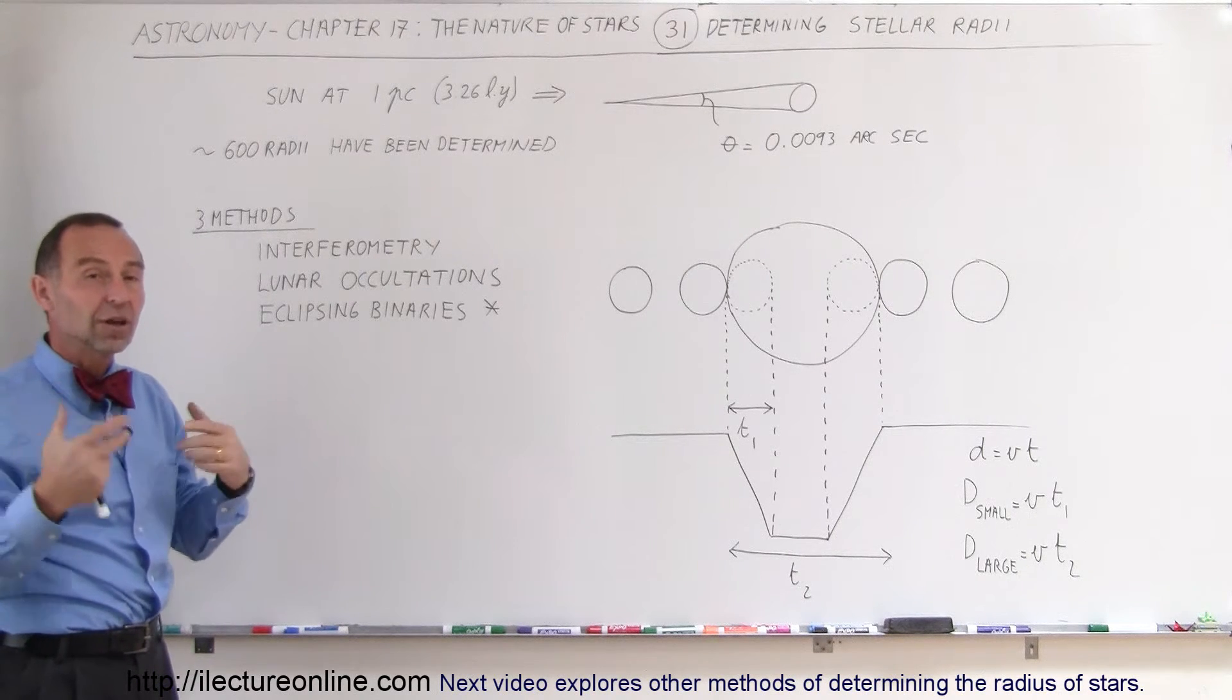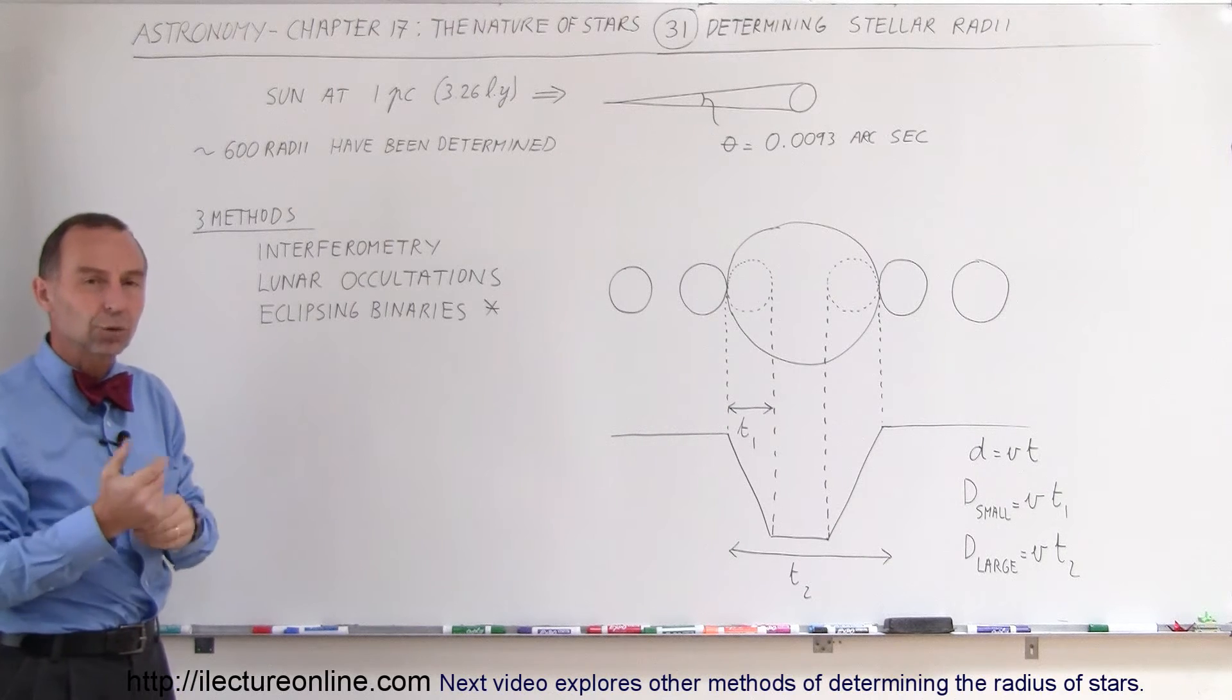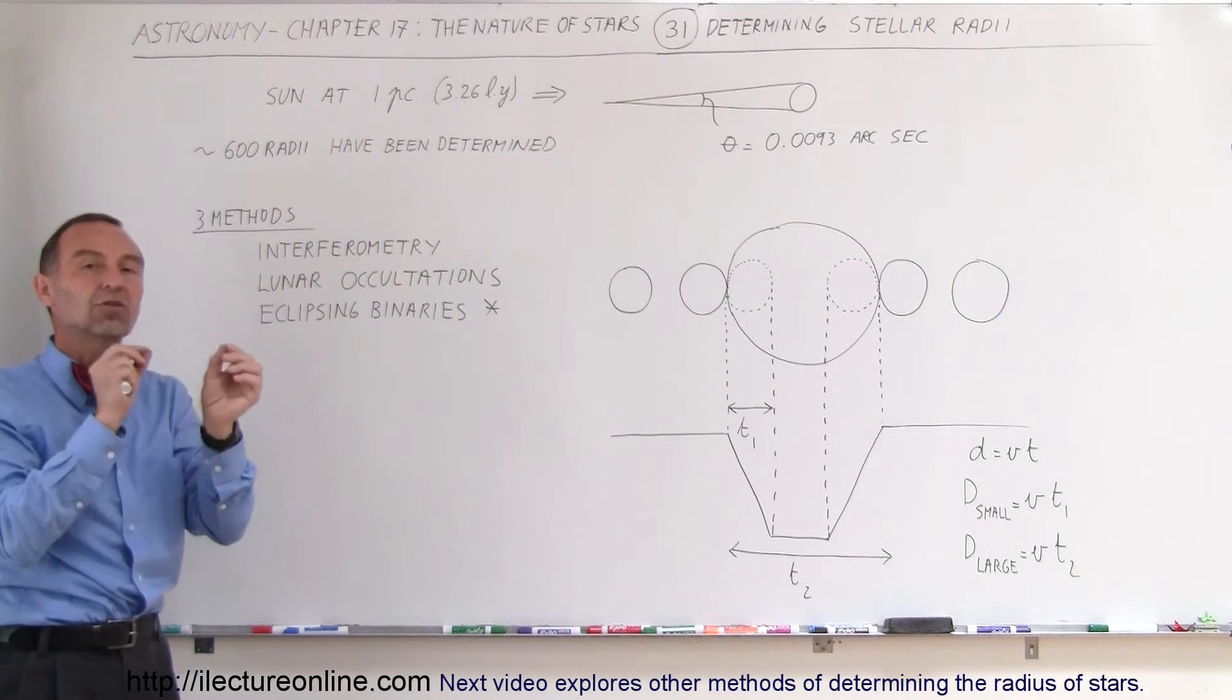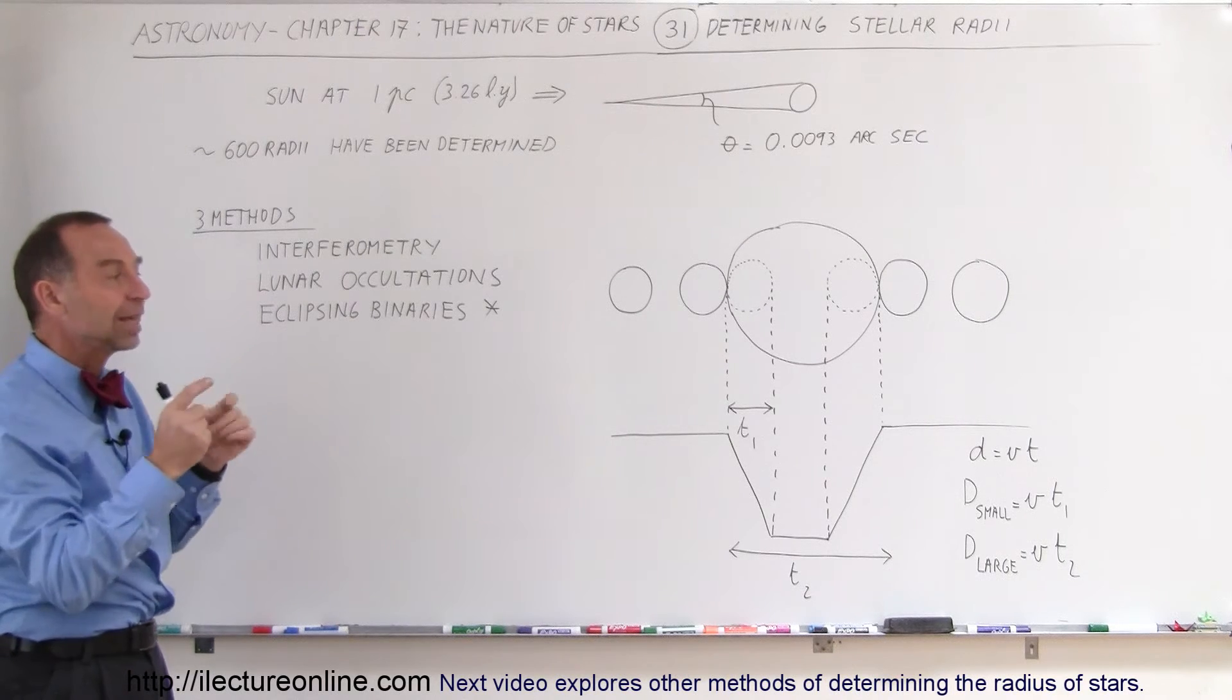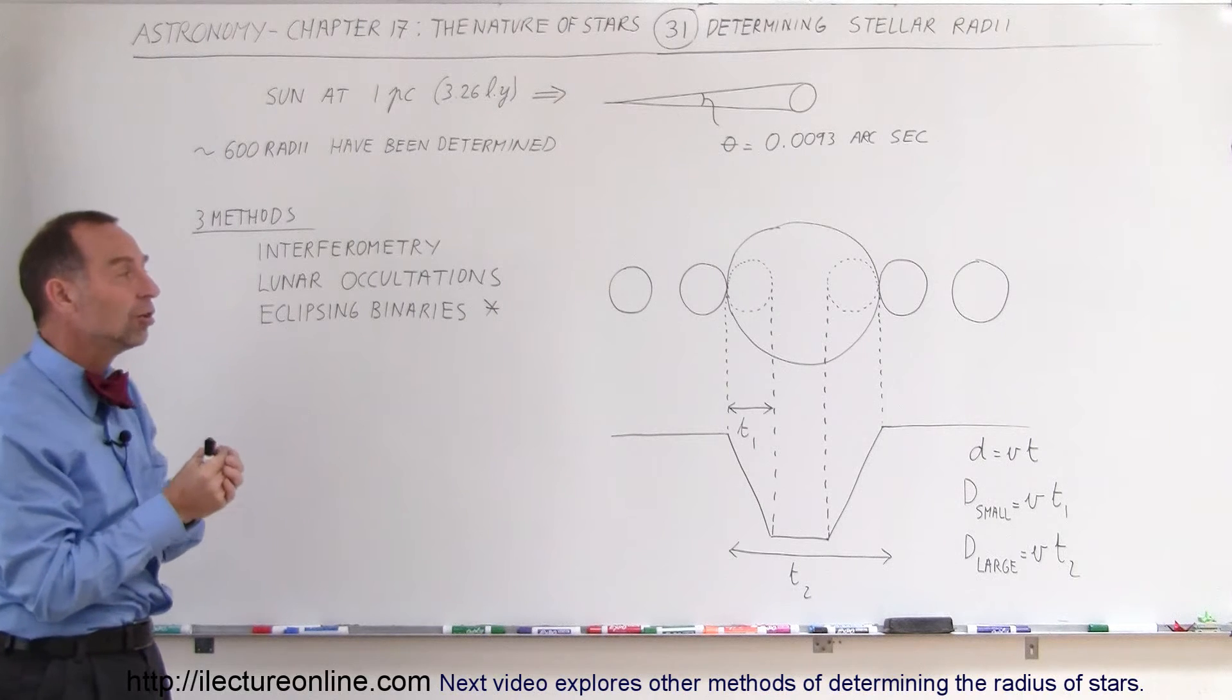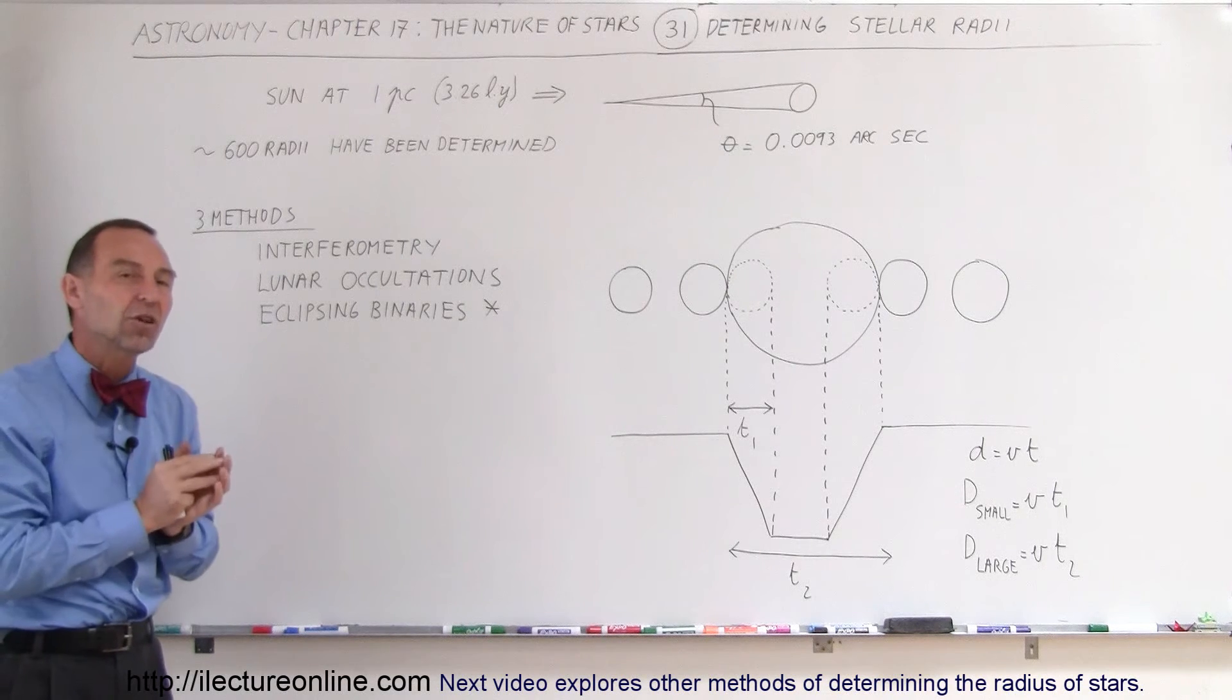In a lot of cases, stars exist in groups of two or three, which we call binary stars. So whenever there's more than one star in a solar system grouped together, where one circles around the other or they both circle around the center mass of each other, we can then say there's a binary star system.